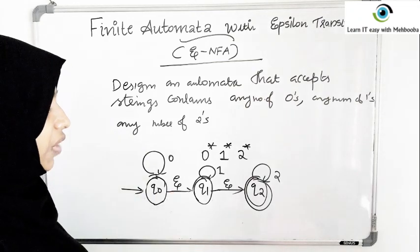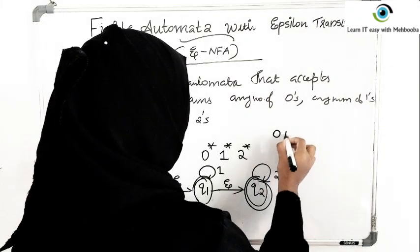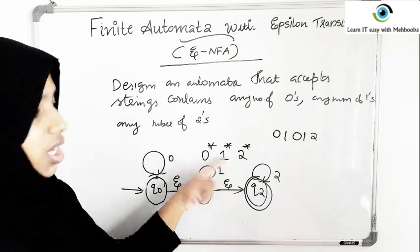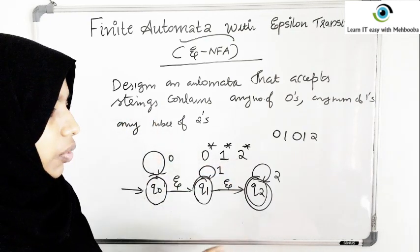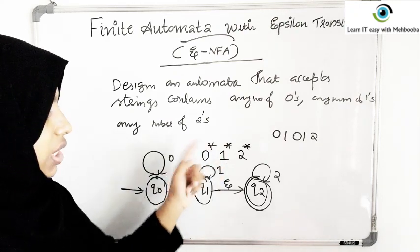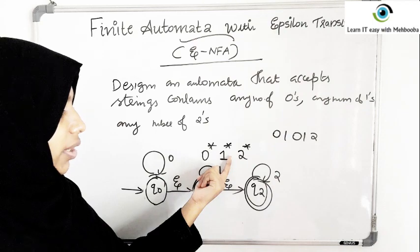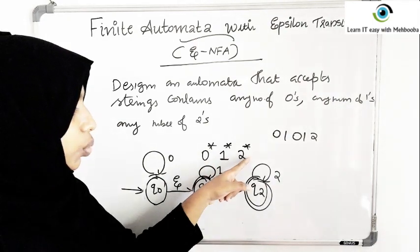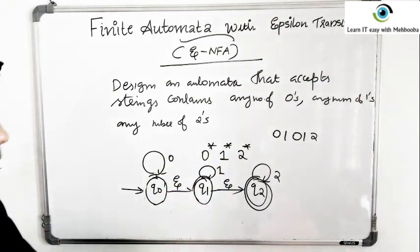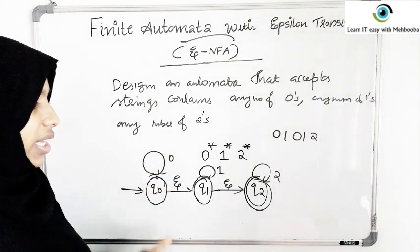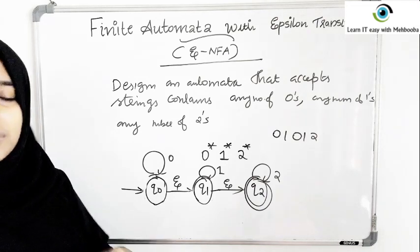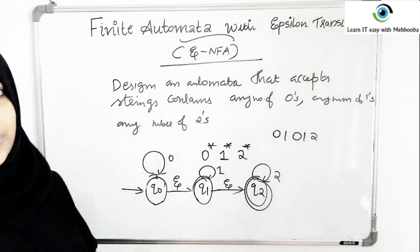So a string like zero, one, zero, one, two will not be accepted because mixing is not allowed. First should come some zeros, then some ones, then some twos. Once ones start to appear, you can't have any more zeros. Once twos start to appear, you can't have any more zeros or ones. That is the pattern, and this is the epsilon NFA. Designing it this way is pretty easy.